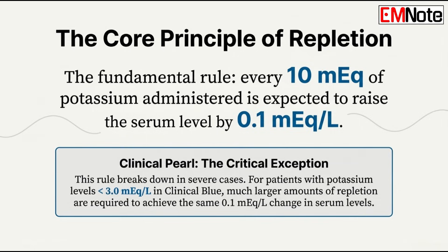Let's get into the math of correction — the rules for replacement. The standard rule to burn into your brain is that 10 milliequivalents of potassium will generally raise the serum potassium level by about 0.1 milliequivalents per liter. Simple enough. But this rule starts to break down when the level gets severely low.